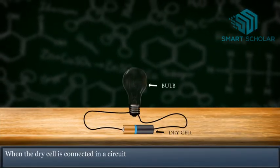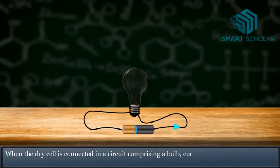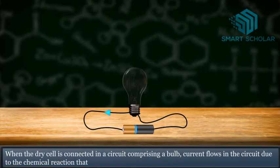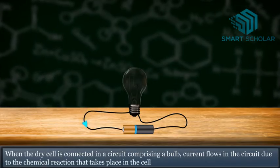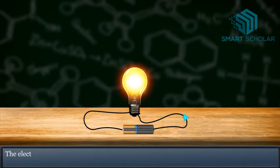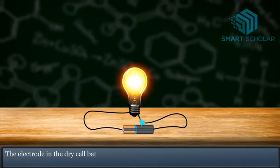Working of a dry cell. When the dry cell is connected in a circuit comprising a bulb, current flows in the circuit due to the chemical reaction that takes place in the cell. This makes the bulb glow.